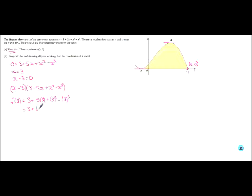So, 3 is 3 plus 15 plus 9. That's 27. Take away 27. It's equal to 0. Therefore, c is equal to 3, 0.